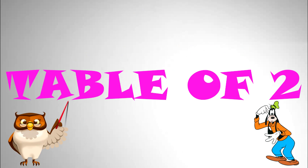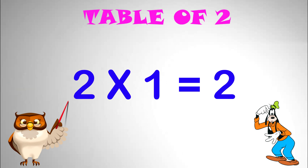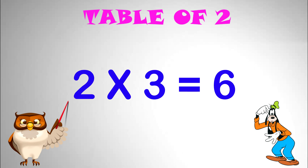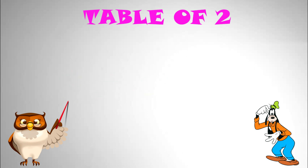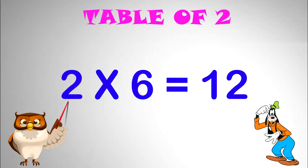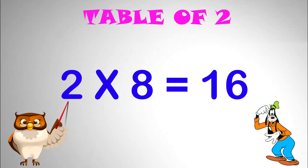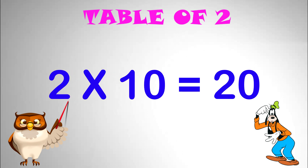Table of 2. 2 x 1 equal to 2. 2 x 2 equal to 4. 2 x 3 equal to 6. 2 multiplied by 4 equal to 8. 2 multiplied by 5 equal to 10. 2 multiplied by 6 equal to 12. 2 multiplied by 7 equal to 14. 2 multiplied by 8 equal to 16. 2 multiplied by 9 equal to 18. 2 multiplied by 10 equal to 20.